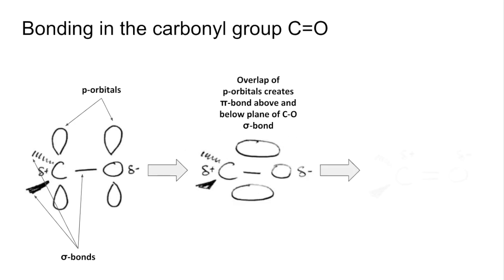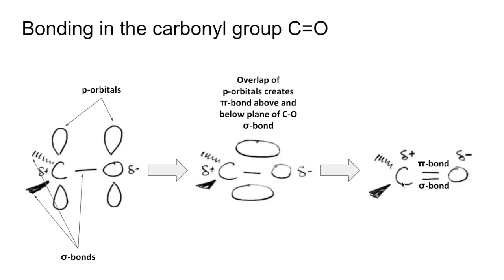We can summarize that with a diagram. In the C double bond O we have a sigma bond and a pi bond. A quick reminder that the shape is trigonal planar because we've got three pairs of electrons — a double bond counts as one region of electron density. Three pairs of electrons all repelling equally gives us the trigonal planar shape and a bond angle of 120 degrees.